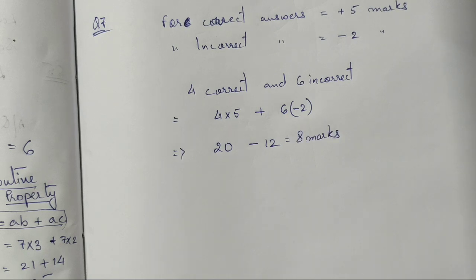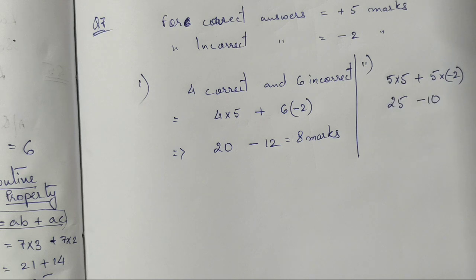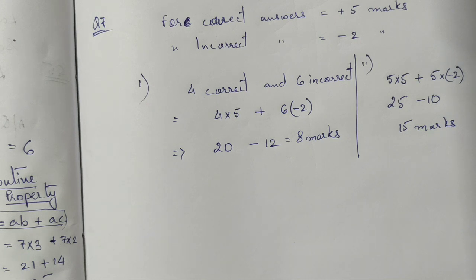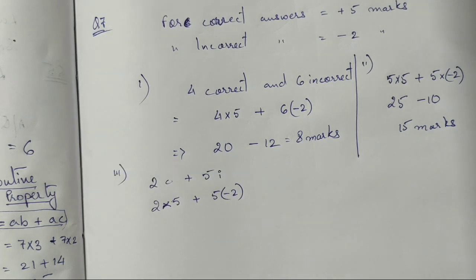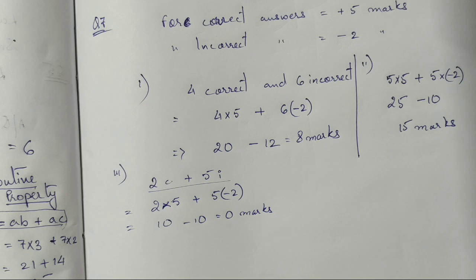For the second part, 5 correct and 5 incorrect gives a total of 15 marks. For the third part, Hina attempted 7 questions — 2 correct and 5 incorrect. Unattempted questions score zero so they don't affect the calculation. Adding 2×5 and 5×(-2) gives Hina zero marks. Remember not to use shortcuts not sanctioned by the textbook.